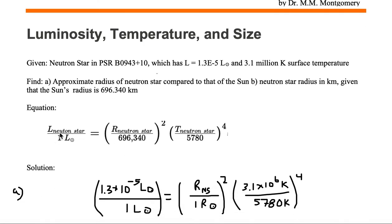We're given this equation where the luminosity of the neutron star divided by the luminosity of the sun equals the quantity (radius of the neutron star divided by the radius of the sun) squared, times the quantity (temperature of the neutron star in Kelvin divided by 5780 Kelvin) to the fourth power.